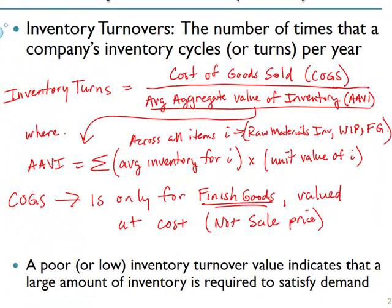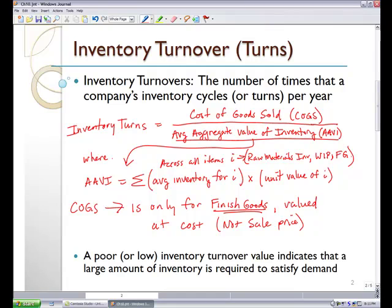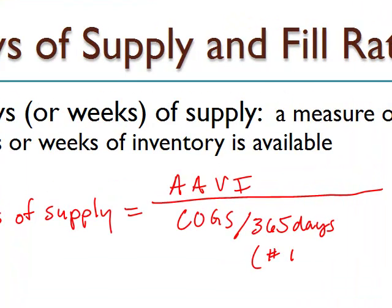When we calculate this, a poor or low inventory turnover value indicates that a large amount of inventory is required to satisfy our demand for that year. The second KPI we talked about was our days or weeks of supply — a measure of how many days or weeks our inventory is available. The days of supply is equal to our average aggregate value of inventory divided by our cost of goods sold divided by 365 days. If we were interested in weeks, we would just use the number of weeks.